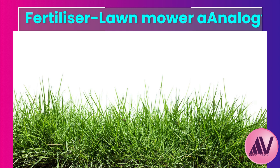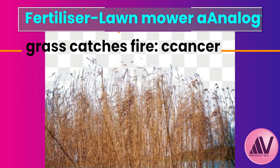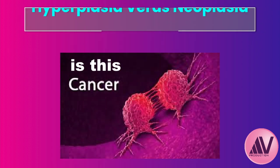The analogy extends to tamoxifen, cast as an extra potent fertilizer that makes the grass grow irregularly, causing cysts to form. If the mowing never happens, the lawn becomes an unruly, yellowed expanse. Dry, windy conditions represent other cellular changes where the whole thing can catch fire — a metaphor for cancer development. That persistent imbalance and lack of mowing can potentially lead to endometrial cancer over time.